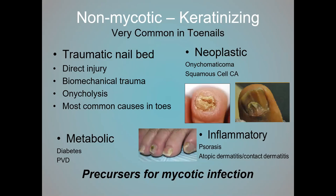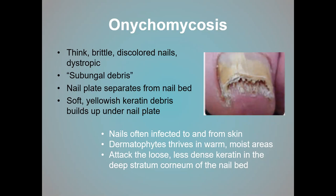Keratinizing conditions that are not fungal are very common, and they set up for fungal infection because the onycholysis allows infectious agents to get underneath the nail plate and attack it. You can also have problems with metabolic conditions — diabetes or circulation problems — that cause nail bed keratinization. And then, of course, there's fungus, the medical term being onychomycosis.